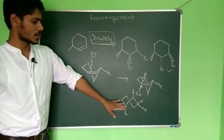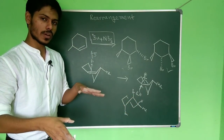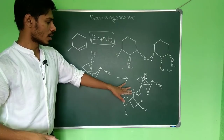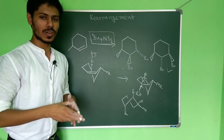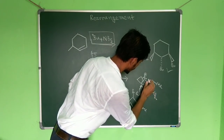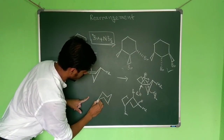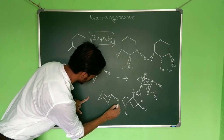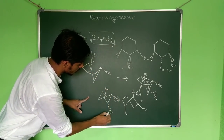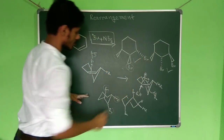If Br⁻ attacks from that position, you get a twist-boat conformation. The methyl and bromine are trans to each other, but the molecule is in twist-boat form — and this reaction would go through a twist-boat-like transition state. However, if you consider attack from the other carbon, you get a chair conformation where the methyl group and one bromine are on the same side. This is the correct product.